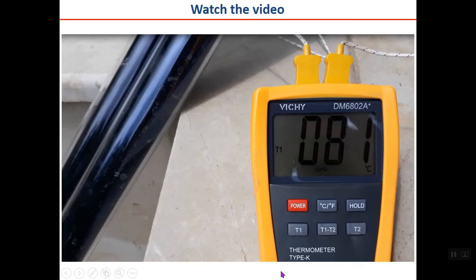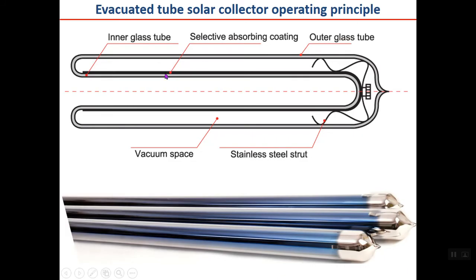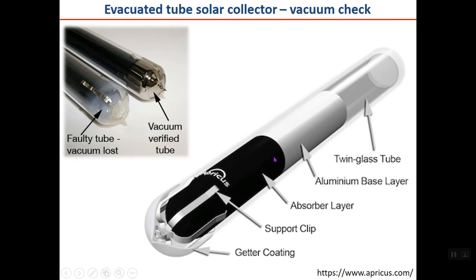The evacuated tube has an outer glass tube and an inner glass tube with selective absorber coating on the outer side of the inner tube. There is a support clip between the two tubes and a getter coating at the bottom. The getter coating allows you to verify if the vacuum is still intact — silver color indicates good vacuum, while white color indicates vacuum loss or outgassing has occurred.